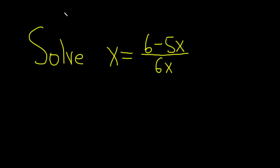Hello, in this problem we're going to solve this rational equation. The goal here is to find the value of x, and we have x over here, an x over here, and an x over here. So the big problem is that we have this fraction, so let's start by getting rid of that.